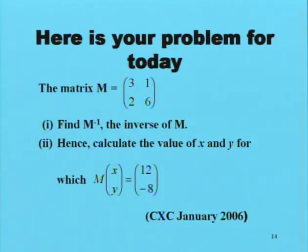Here is your problem for today. The matrix M equals (3, 1, 2, 6). Part 1: Find M inverse. Part 2: Hence, calculate the value of x and y for which M times (x, y) equals (12, -8). This question is taken from CXC January 2006.